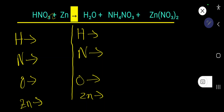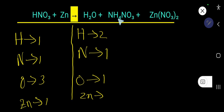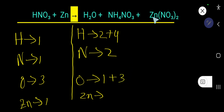How to balance HNO₃ plus zinc that produces water plus ammonium nitrate plus zinc nitrate. On the left-hand side: hydrogen is 1, nitrogen is 1, oxygen is 3, zinc is 1. On the right-hand side: hydrogen is 2, oxygen is 1, nitrogen is 1, hydrogen is 4, nitrogen is 1 — so 2 nitrogen in that compound. Oxygen is 3, zinc is 1. The subscript is common, so 1 times 2 is 2. Zinc is 1, nitrogen is 2, oxygen is 3 times 2 = 6.